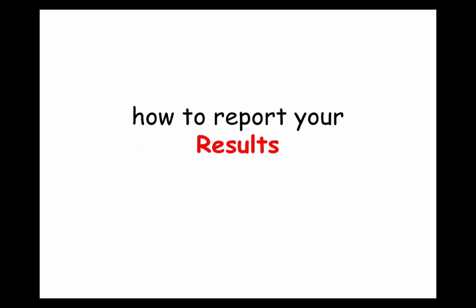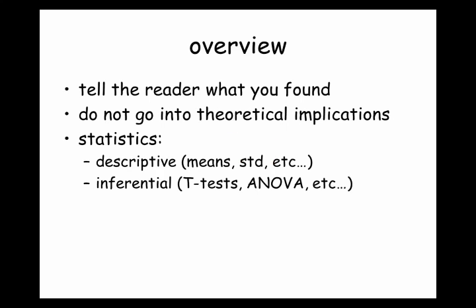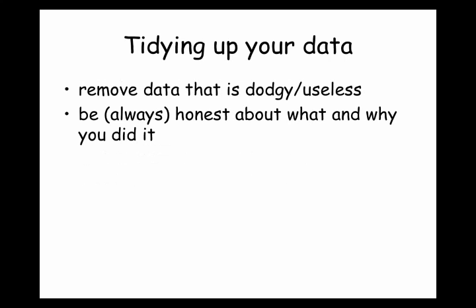How do you report your results? That's the interesting bit because this is where the statistics come in. In the results section, you tell the reader everything that you found but you don't go into the theoretical implications. On the level of a PhD thesis you always struggle to separate these two things, but here it's only about six pages — you split these things completely into two. You just explain what you found, and then you explain what it means. We have two kinds of statistics: descriptive statistics and inferential statistics. First you do the descriptive, then the inferential. First you need to tidy up your data and remove dodgy data — potentially remove outliers if you have extreme outliers.